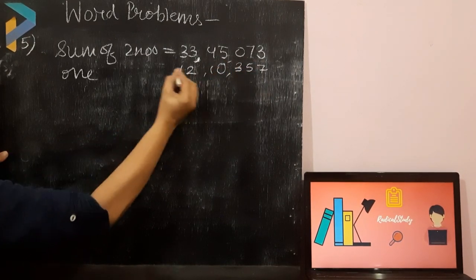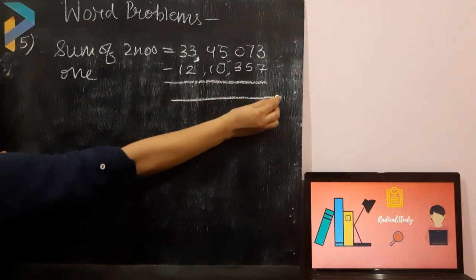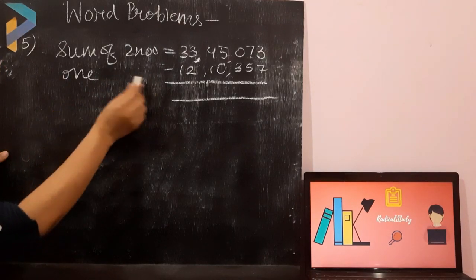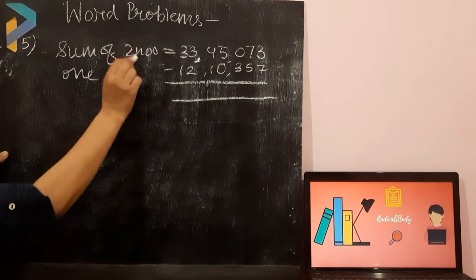Now, one number is given to you which is 12,10,357. You have to find out the other number. To find out the other number, what we are going to do? We are going to subtract it. The first number is given to you that is 12,10,357. Sum is also given.